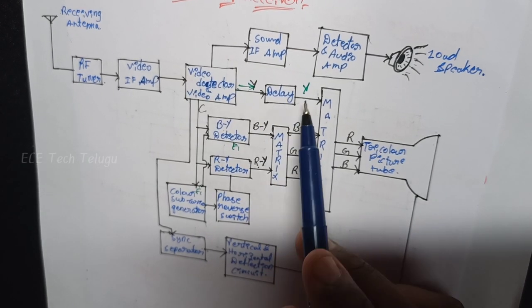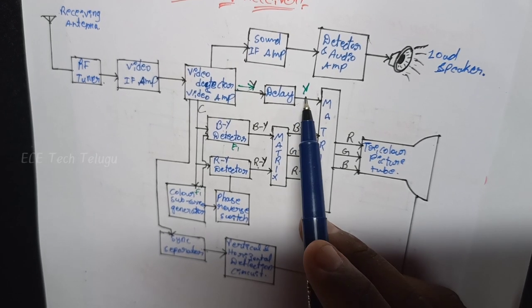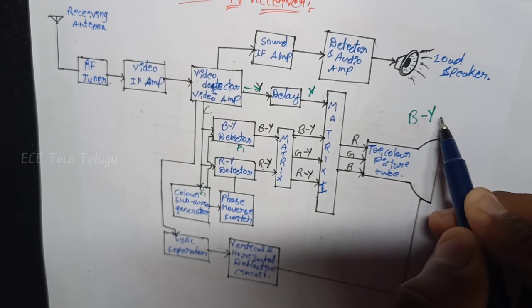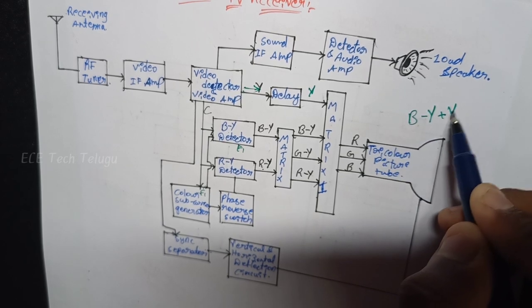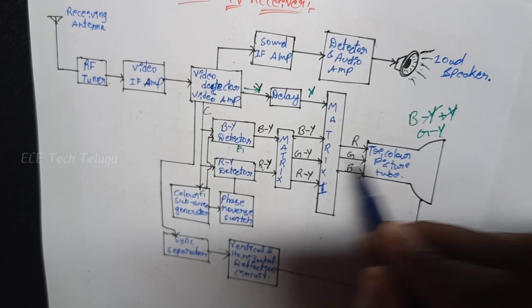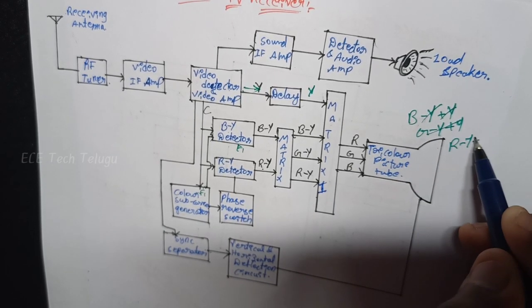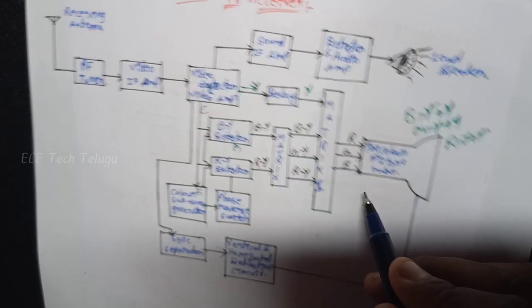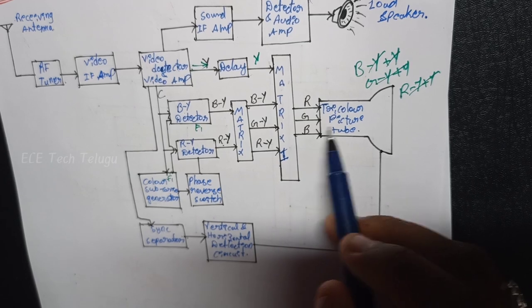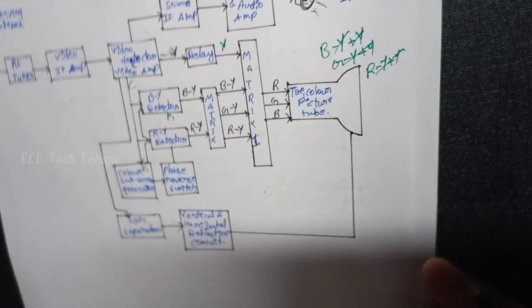In the matrix, the Y component in B-Y, R-Y, and G-Y is cancelled out. So B minus Y plus Y gives B as output; similarly G and R are recovered. This produces the three output signals R, G, and B, which are fed to the picture tube to display the color picture.